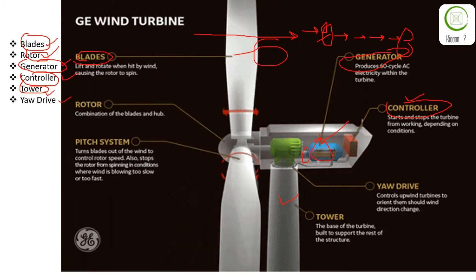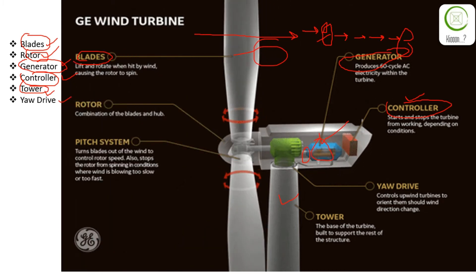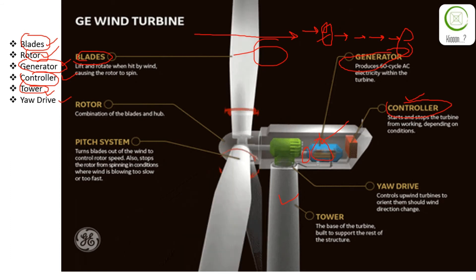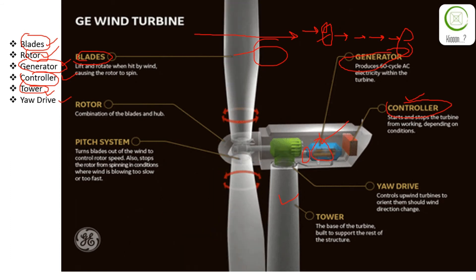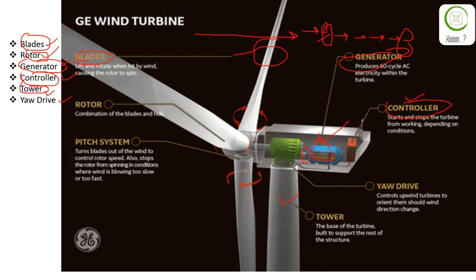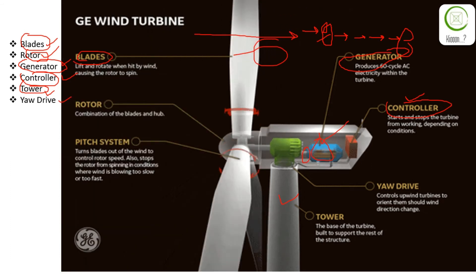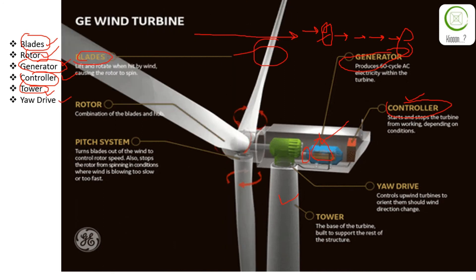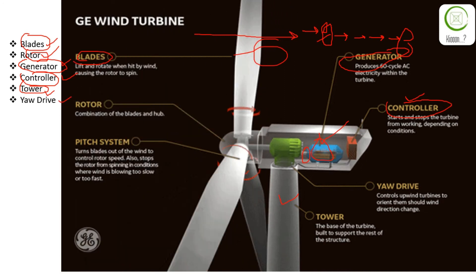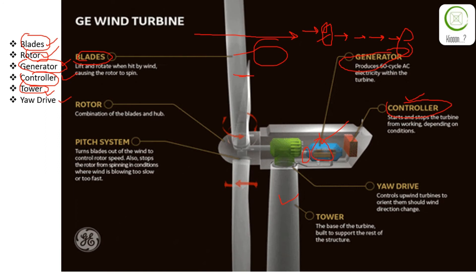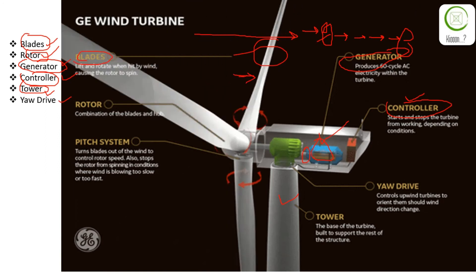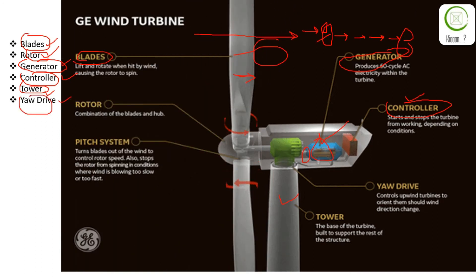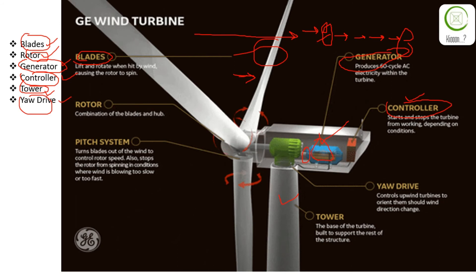The fifth component is the tower. The tower is built at an elevated height so the wind turbine can be installed at a greater height, allowing the blades to also be at a greater height. Additionally, at higher elevations the air is more stable, which improves performance.